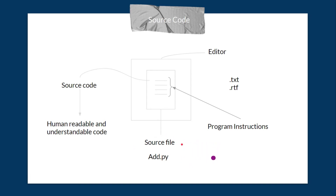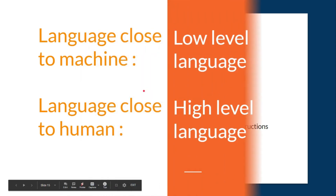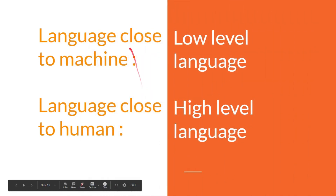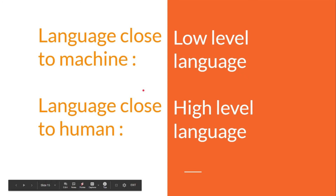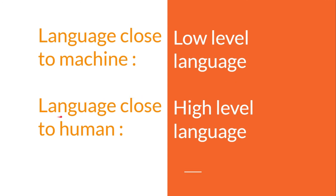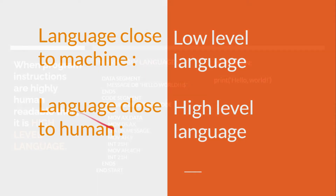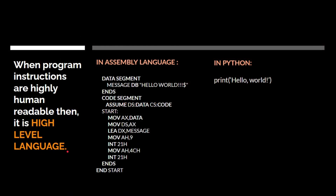A language which is very close to machine is known as a low-level language. In low-level language, the syntax is less readable. A language which is close to humans is a high-level language. In high-level language, we can easily understand the syntax, and when program instructions are highly human readable, it is called a high-level language.